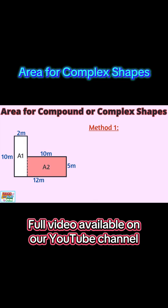Now all we have to do is find the area of each of the rectangles and add them together. 20 square meters plus 50 square meters is equal to 70 square meters, so the total area of the original complex shape is 70 square meters.